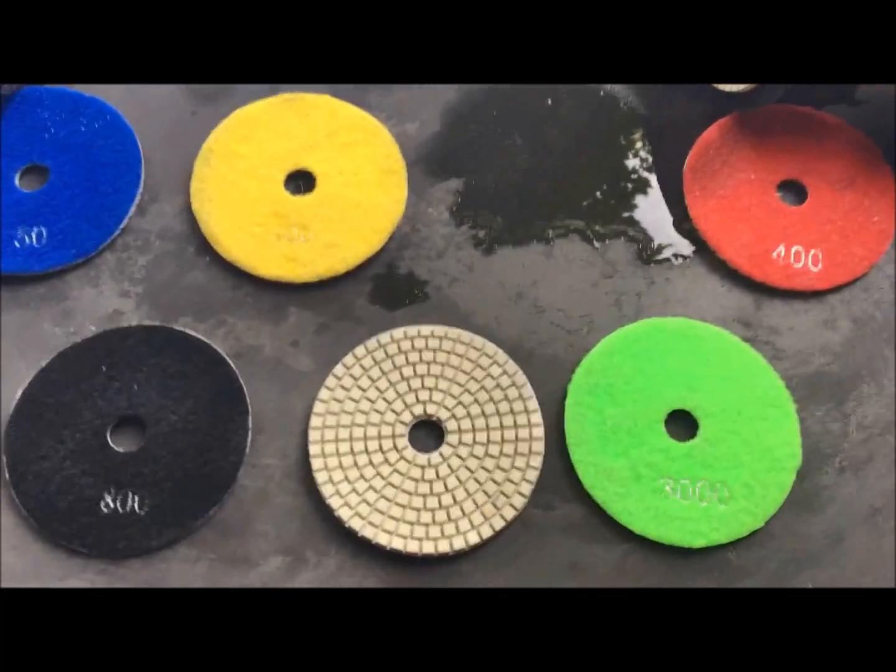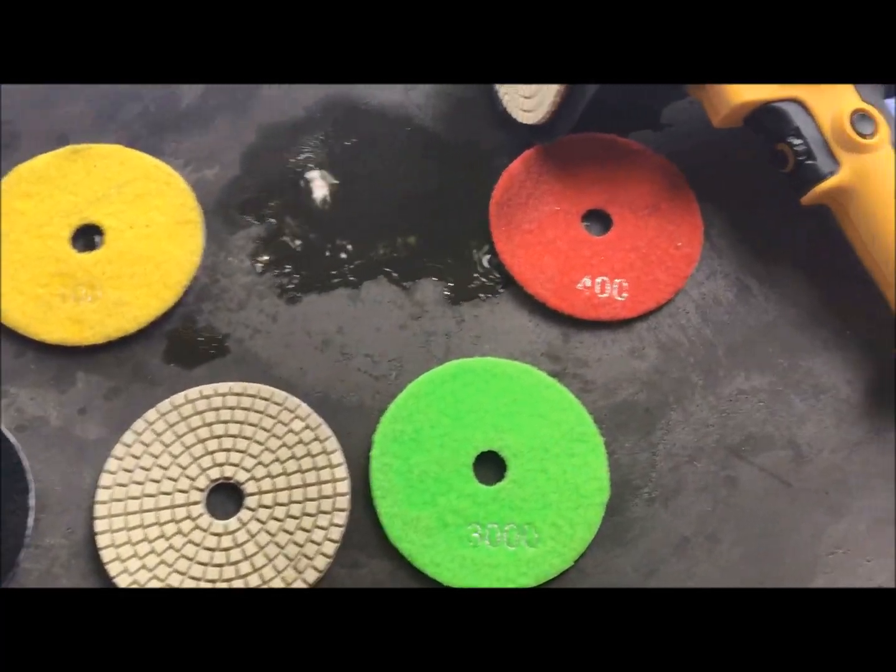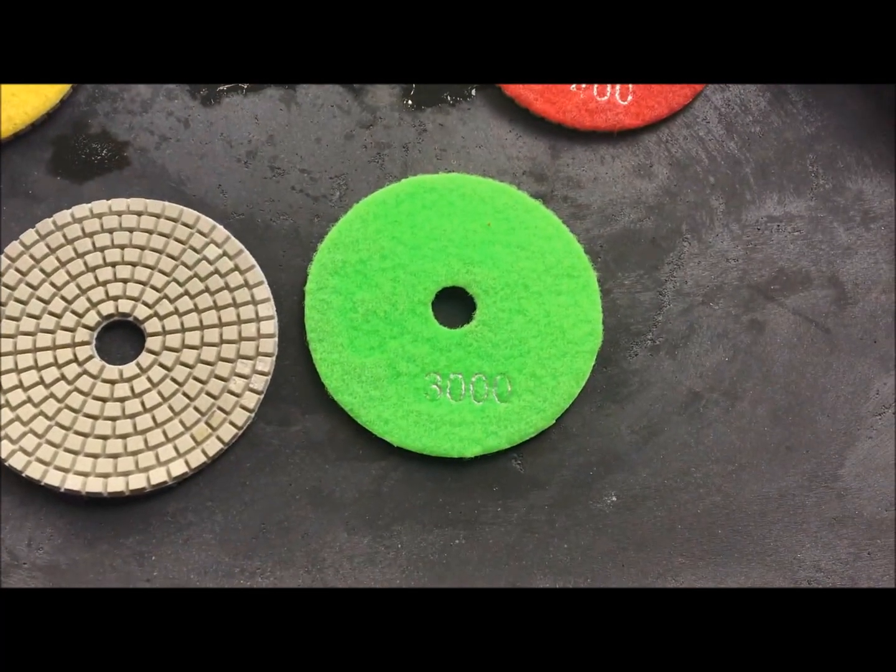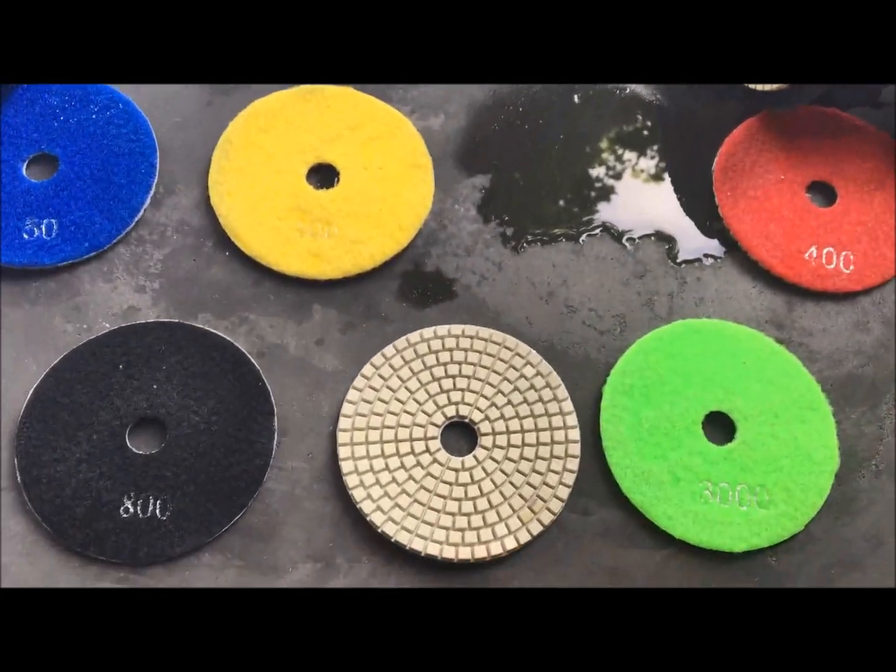Grits ranging from 50 all the way to 3000. 50 being the pad that removes the most material, so that will be good on finishing these edges that are pretty rough, bringing them down to a quick smooth finish. And then you continually move up grits all the way to 3000 if you want to.